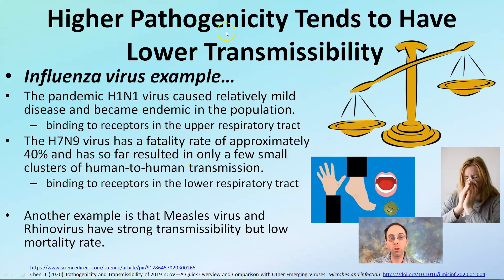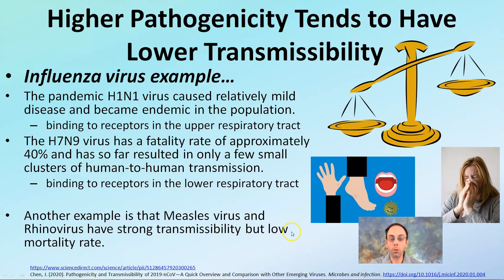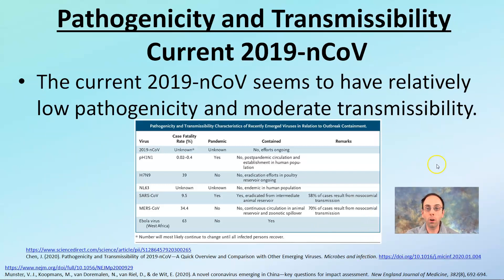When looking at higher pathogenicity trends, there tends to be lower transmissibility. The H1N1 pandemic virus caused relatively mild disease and became endemic, binding receptors in the upper respiratory tract. Compared to H7N9, which has a fatality rate of about 40 percent, it has resulted in only a few small clusters of human-to-human transmission, binding receptors in the lower respiratory tract. Measles virus and the rhinovirus have strong transmissibility but a low mortality rate. You get this trade-off between high mortality and low transmissibility. The coronavirus currently seems to have relatively low pathogenicity and moderate transmissibility.